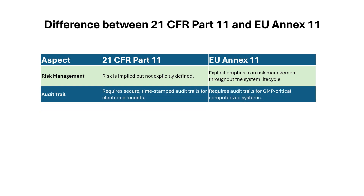Next is audit trail. 21 CFR Part 11 requires secure, time-stamped audit trails for electronic records. Whereas EU Annex 11 requires audit trails for GMP critical computerized systems. Both guidelines address audit trail requirements for all regulated activities performed in the system.